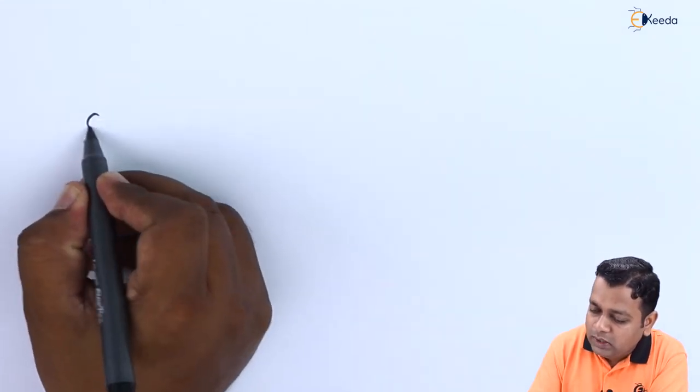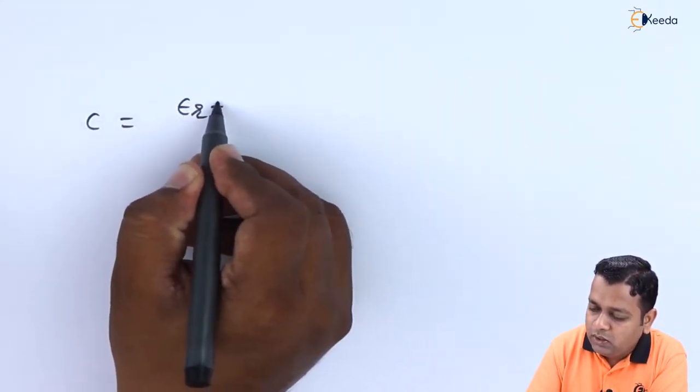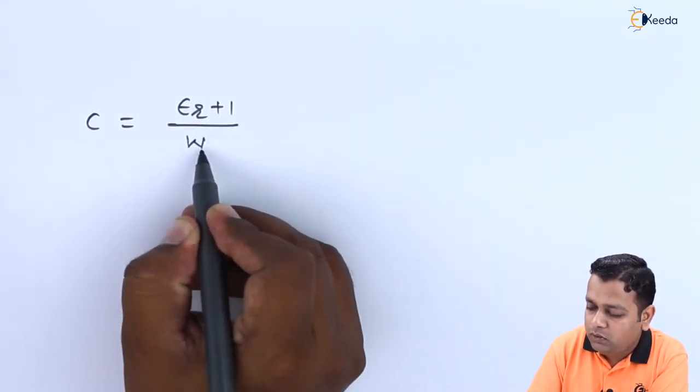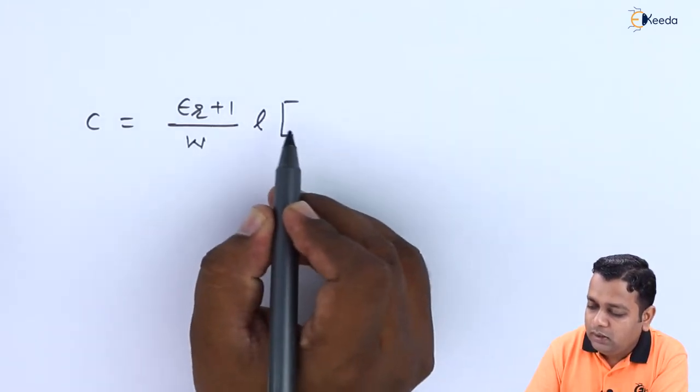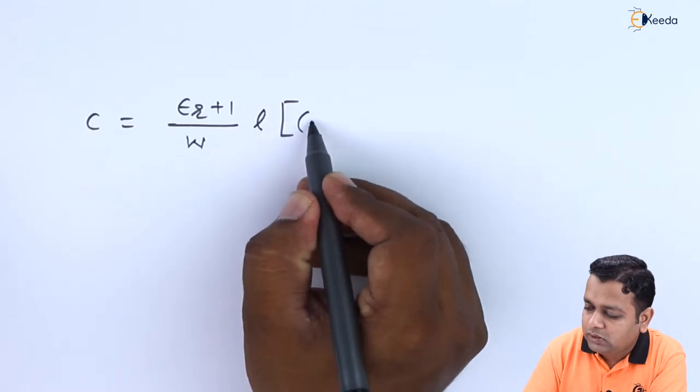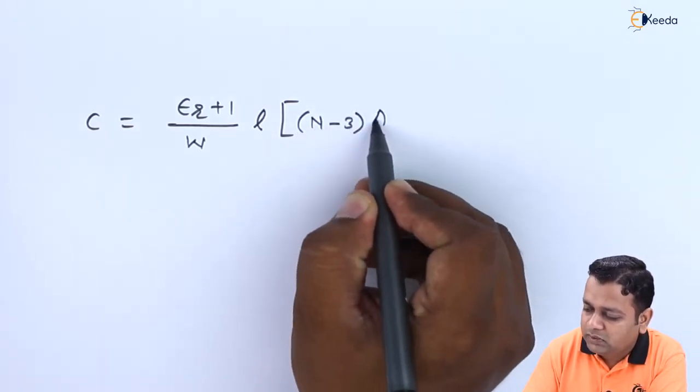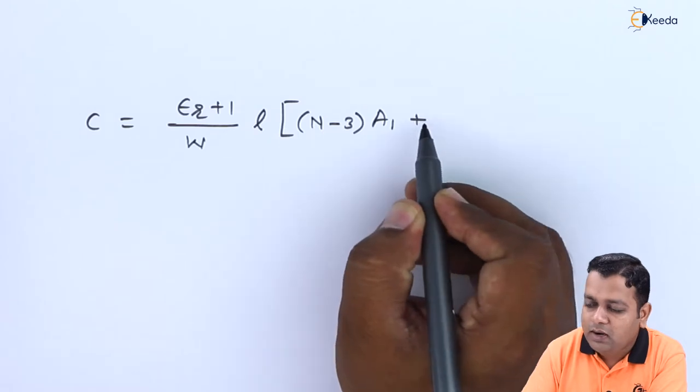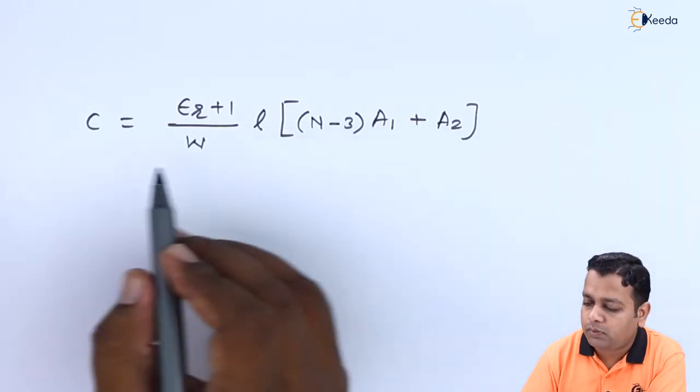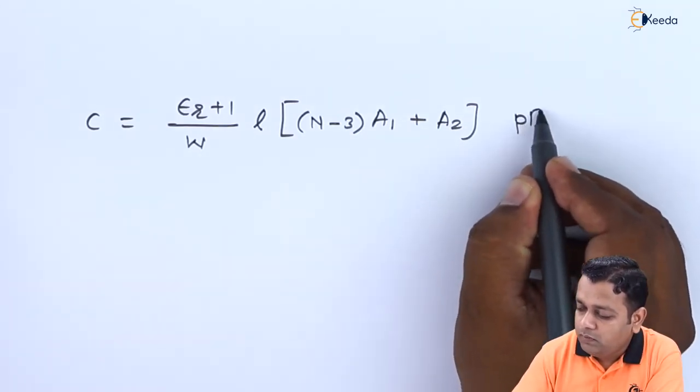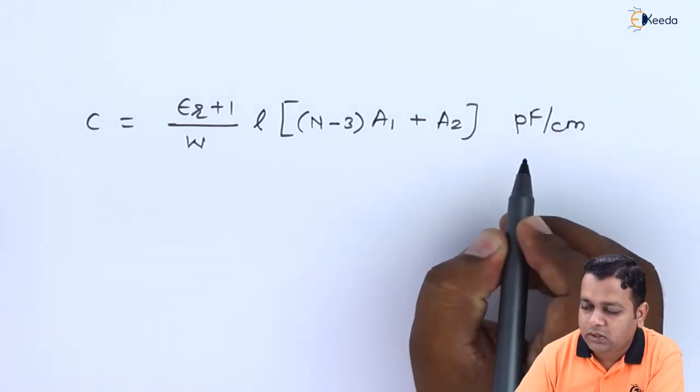So for determination of the capacitor capacitance here for the interdigitated type we have the formula. The formula is capital C is equal to epsilon r plus 1 divided by w and this ratio is in multiplication to small l in multiplication to the square bracket that involves the first term n minus 3 times capital A1 added to the second term denoted capital A2 and the expected value of the capacitance is in the terms of picofarad per centimeter here.